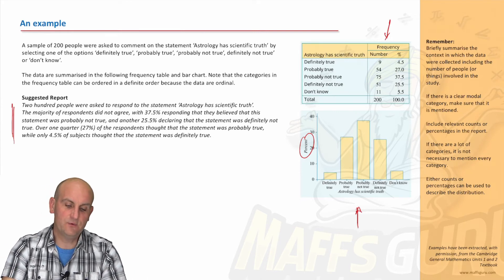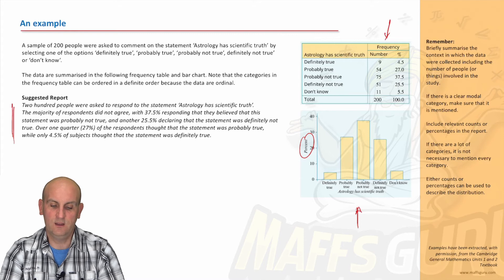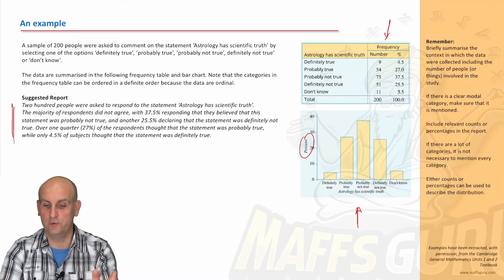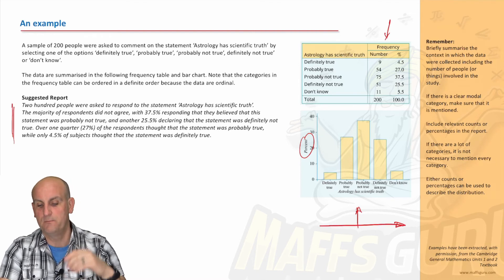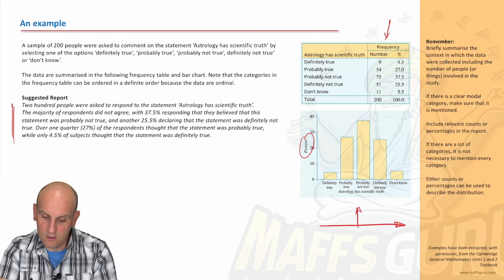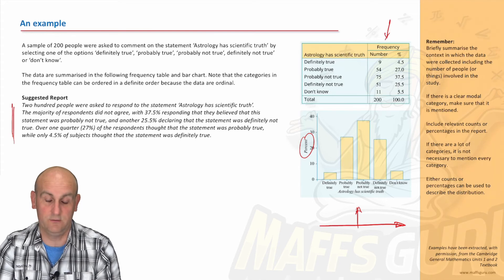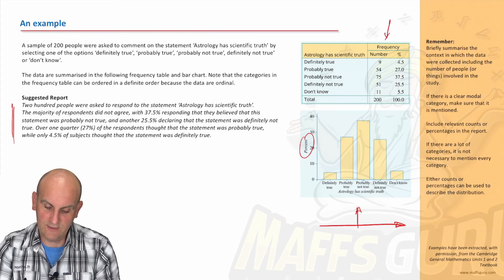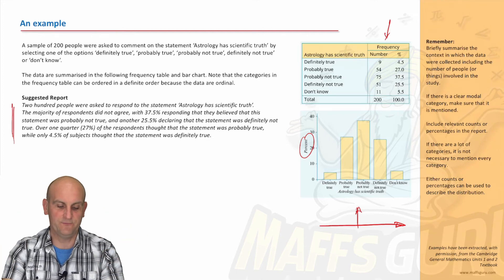Selecting one of the options, definitely true, probably true, probably not true, definitely not true, or I don't know. Now here we've got five options. Hopefully my report isn't going to talk about all five of those. It seems a bit of an overkill, but let's see. All right, the data is summarized in the following frequency table and bar chart. Note the categories in the frequency table can be ordered in a definite order because the data are ordinal. All right, now remember it's ordinal. So in this situation, they've listed the data as definitely true, probably true, probably not true, definitely not true, and don't know. All right, so they've obviously gone with a particular order. That's fine.